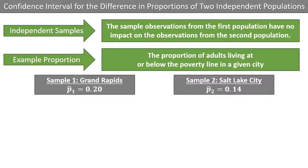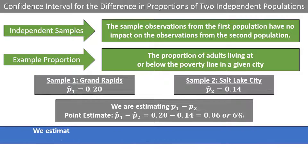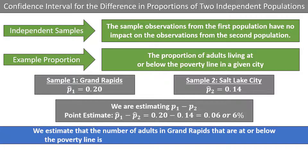The quantity we are trying to estimate is the difference of two population proportions, p1 minus p2, and the point estimate is the difference of the two sample proportions, p-hat1 minus p-hat2, which comes to 0.2 minus 0.14 and equals 0.06 or 6%. The interpretation is that we estimate that the number of adults in Grand Rapids below the poverty line is 6 percentage points higher than adults in Salt Lake City.